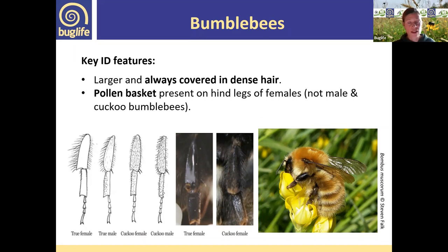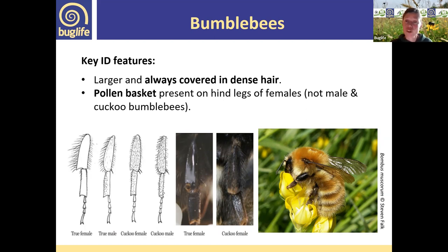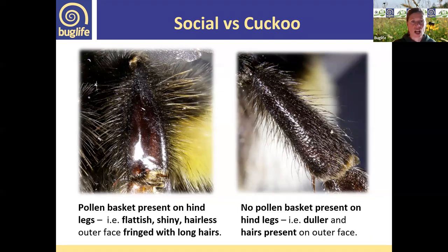Of the 24 species of bumblebee in the UK, six are cuckoo bees — just like the bird, they seek out another bumblebee's nest, usurp the queen and lay their own eggs. The workers of the original nest then look after those eggs and larvae. Therefore the female cuckoo bees don't need to collect pollen, so they don't have a true pollen basket. A close-up comparison shows a social bee's shiny pollen basket fringed with long hairs, versus the cuckoo bee where it's not shiny and hairs are dispersed throughout.